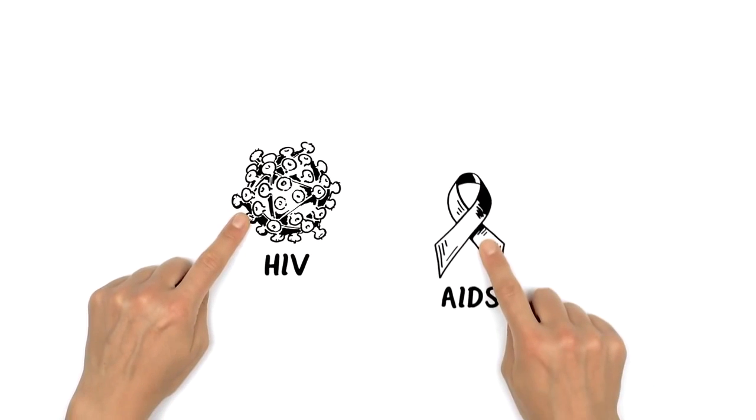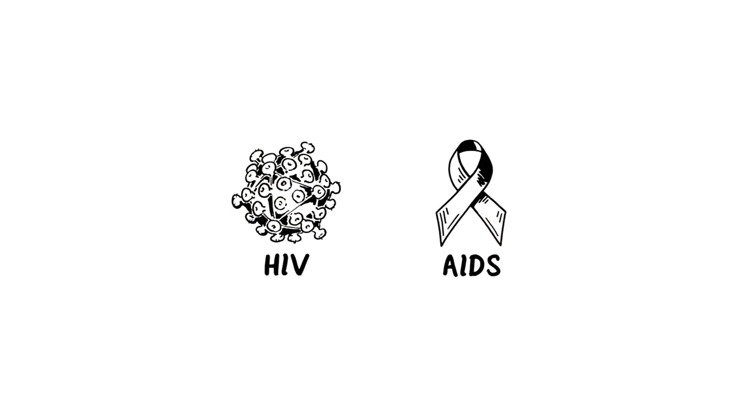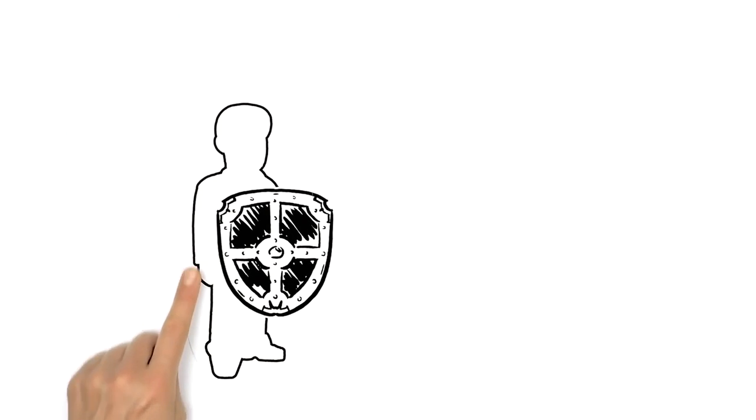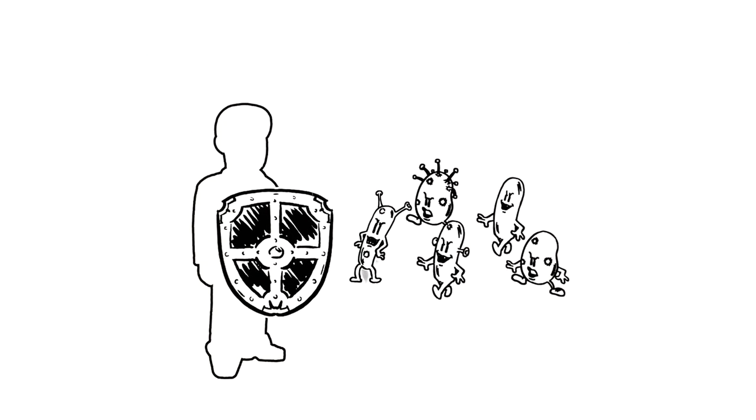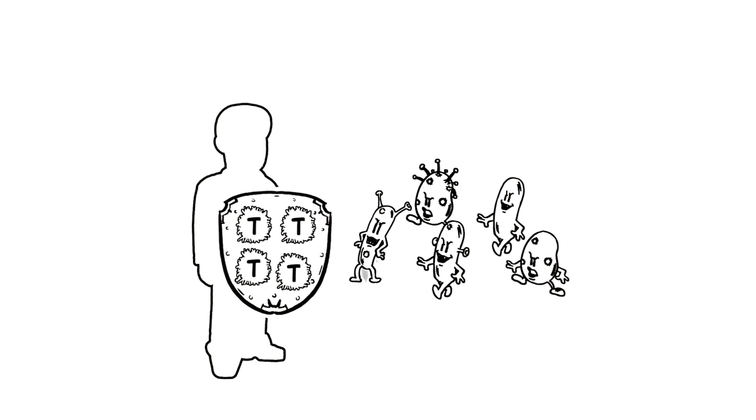We explain HIV and AIDS. The human immune system defends the body against illnesses all the time. It uses guards in the blood called T-cells to recognize any intruders and destroy them.